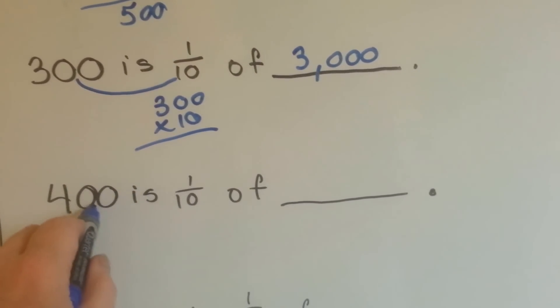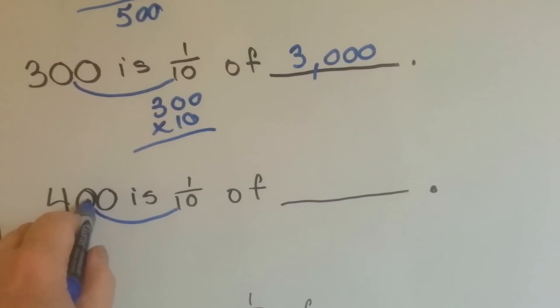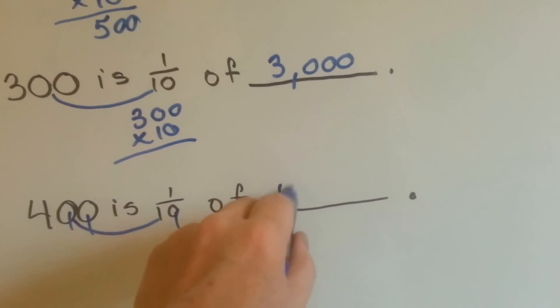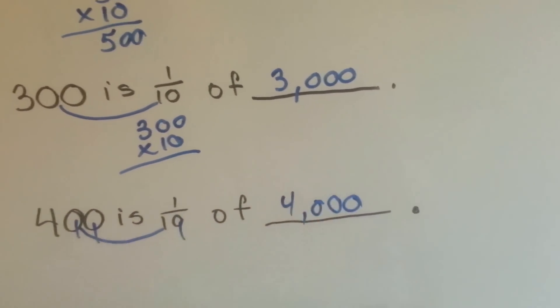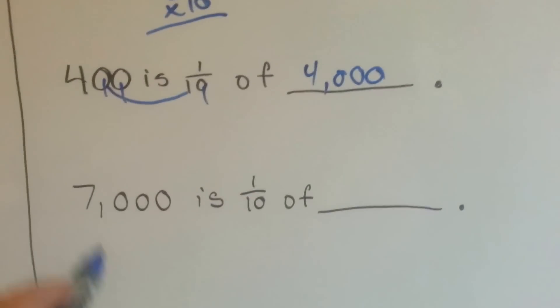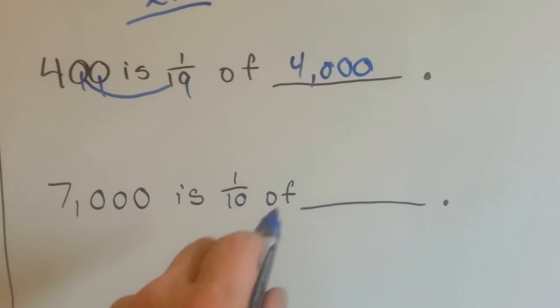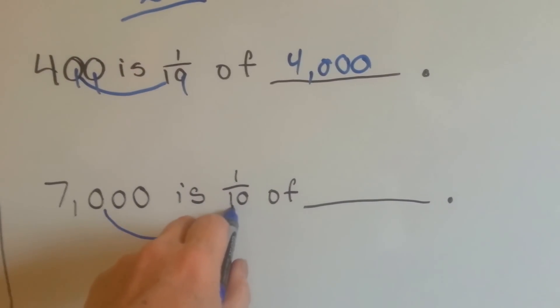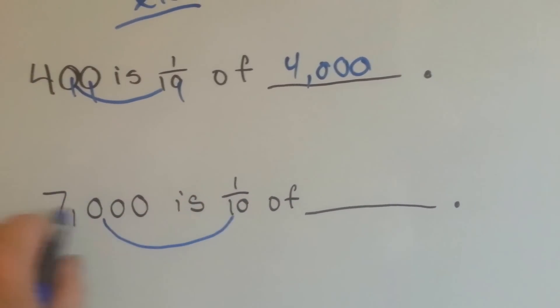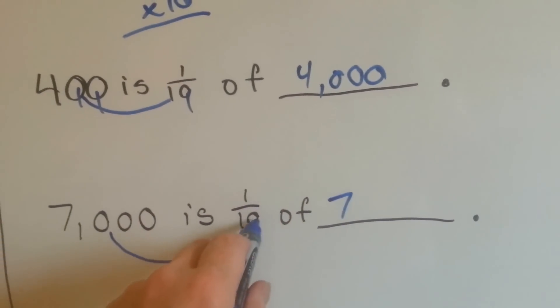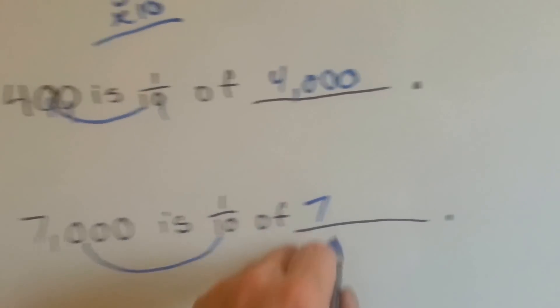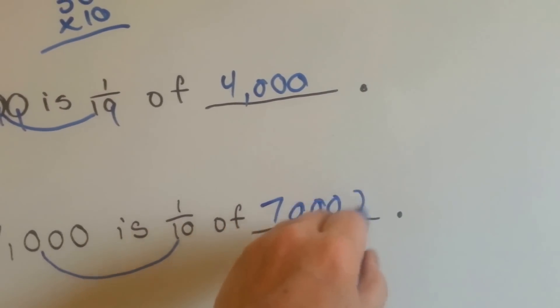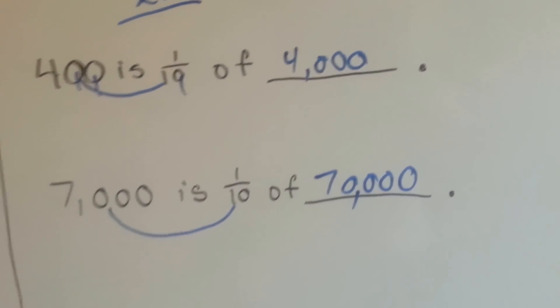400 times 10 is going to be a 1 times 4 with 3 zeros. 1, 2, 3. 7,000 is 1 tenth of what number? We're going to multiply the 7,000 times 10. We're going to do 1 times 7, which is 7, and we're going to add the 1, 2, 3, 4 zeros. That's going to give us 70,000.